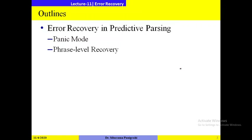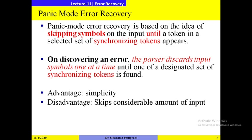In panic mode error recovery, the technique is based on the idea of keeping symbols on the input until a token in the selected set of synchronizing tokens appears. When an error occurs, the parser skips the input where the error has occurred, one input at a time, and moves to the next input until a synchronizing token appears. Synchronizing tokens are basically delimiters like comma or semicolon.